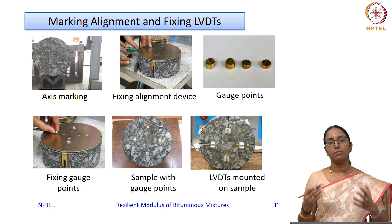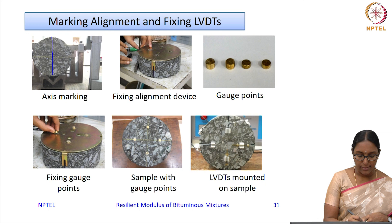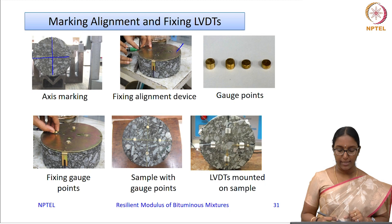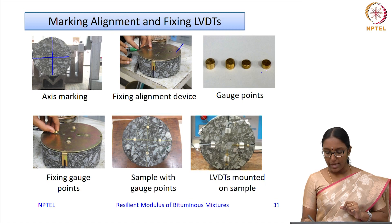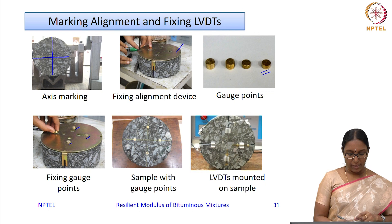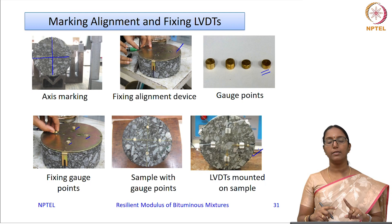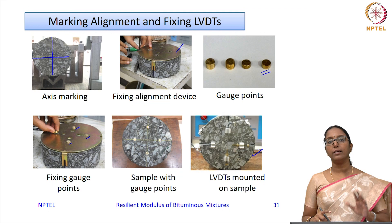To align the specimen and connect the LVDTs, you first mark the axis, place the specimen horizontally in a groove for marking, and then fix an alignment device on top through which gauge points are fixed. The gauge points are glued to the surface, and LVDTs are connected to them. The code specifies that data must be collected in both the horizontal and vertical directions.